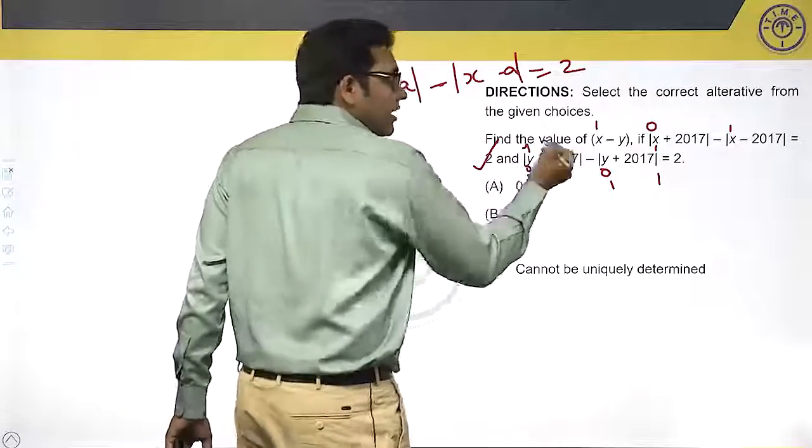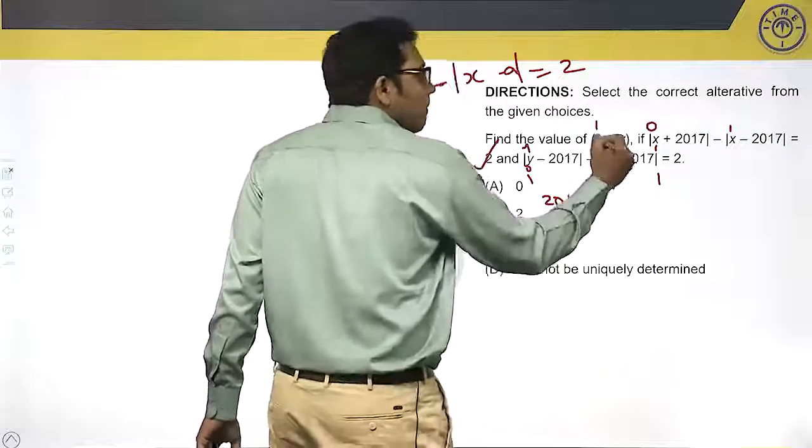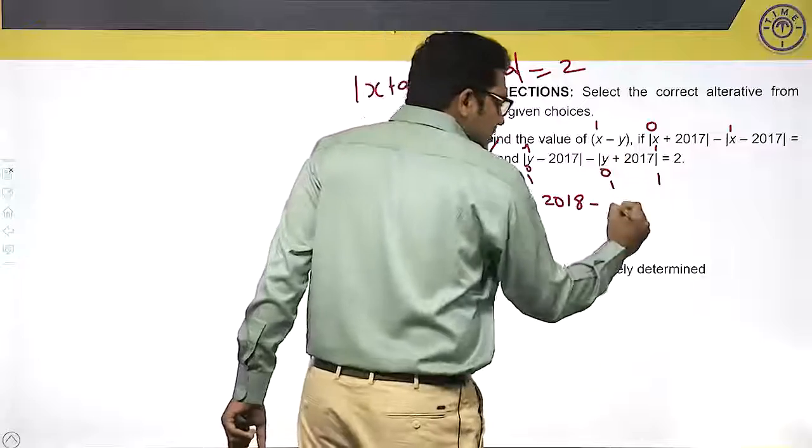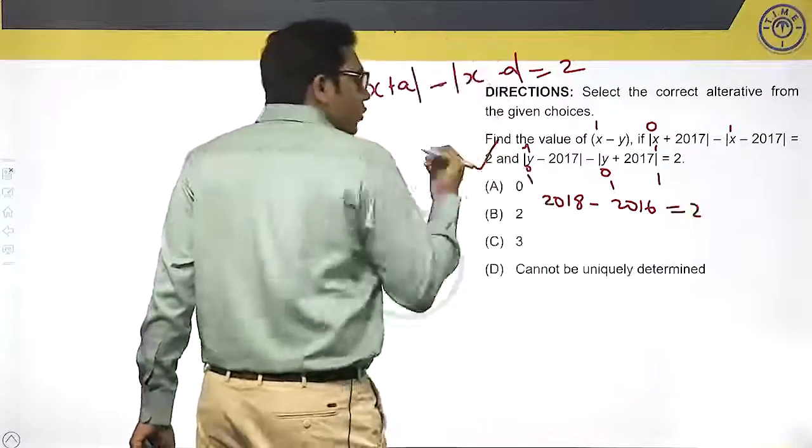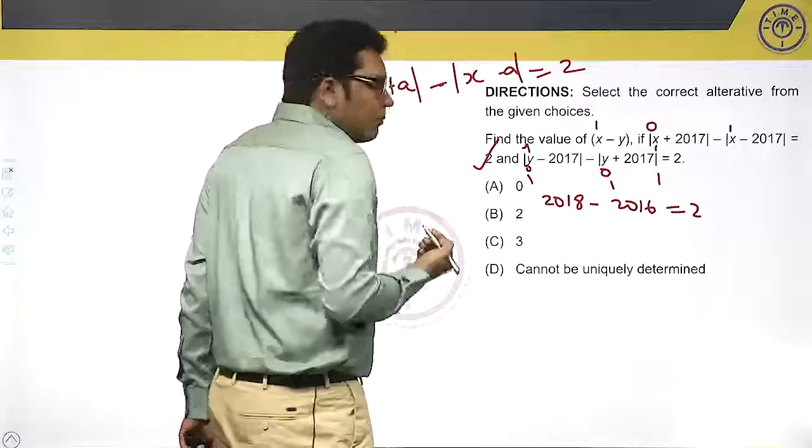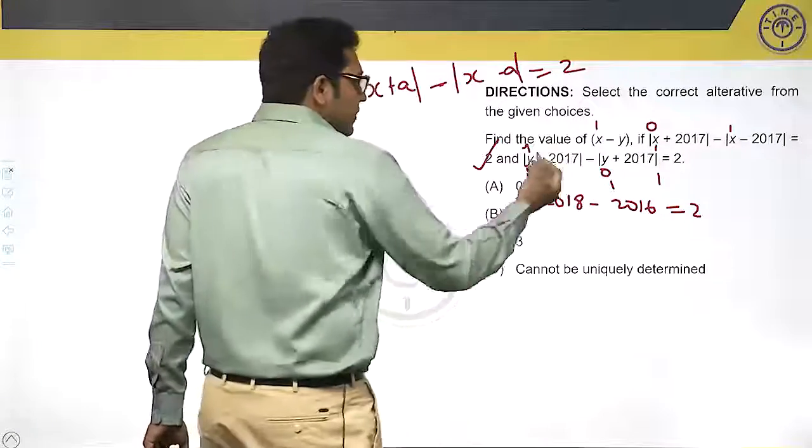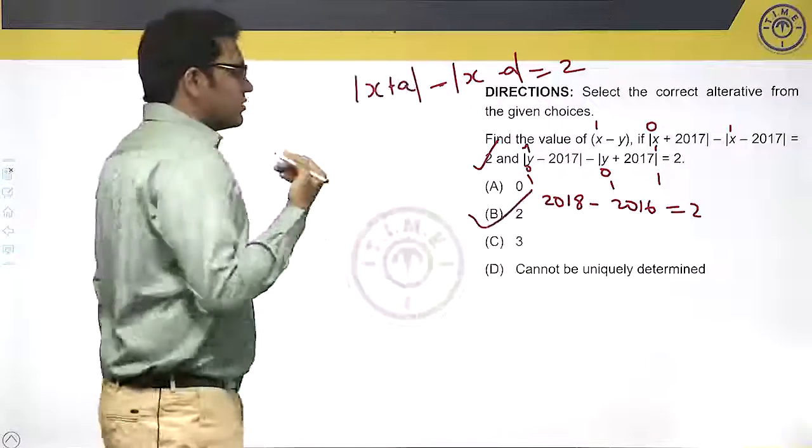When y is -1, -1 - 2017 = -2018, which becomes 2018, and -(-1 + 2017) = -2016, which becomes 2016. 2018 - 2016 equals 2. Therefore x is 1 and y is -1. As I decrease y, the value keeps increasing. So 1 - (-1) = 2. That's your answer.